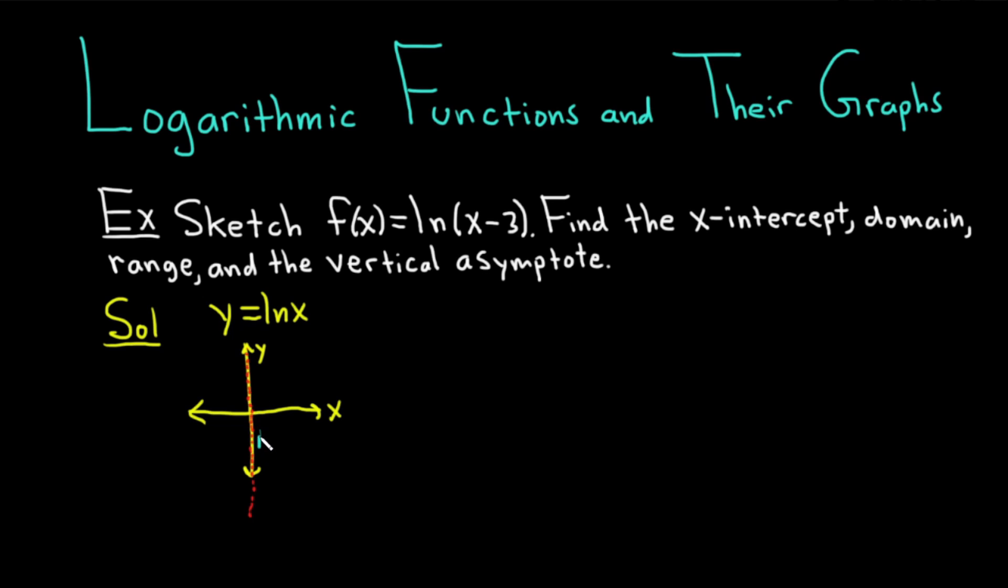So let me just do that again so it's really clear. It looks like this, and it gets infinitely close to that vertical asymptote. And it crosses the x-axis at the point 1 comma 0.